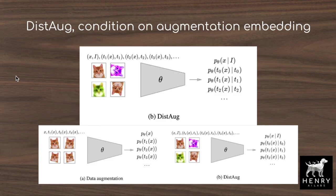The idea behind DistAug is inspired by multitask learning, where you condition a model on some task information to inform it about what task it's currently performing. Rather than just training the model on modeling the density of augmented images — P of theta of X, P of theta of T1 of X, T2 of X, and T3 of X — where T1, T2, and T3 are augmentations sampled from a family of transformations capital T, DistAug conditions on the transformation.